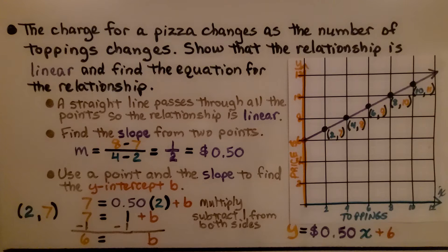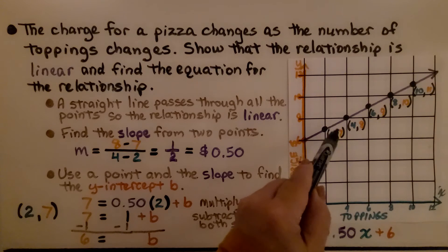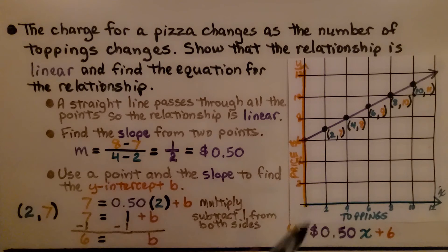We use a point and the slope to find the y-intercept b. I decided to use this first point, 2,7. And I substituted them into the equation for the slope-intercept form. So for y, I have 7. And for x, I have 2. And I have my slope here. I multiply 50 cents times 2, which gives me a dollar.